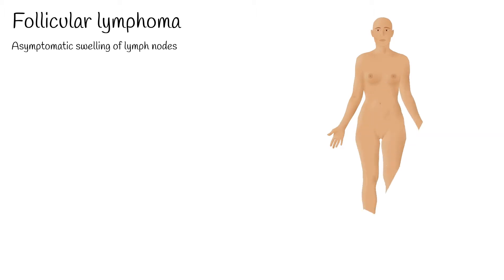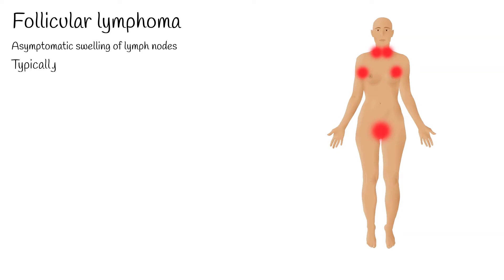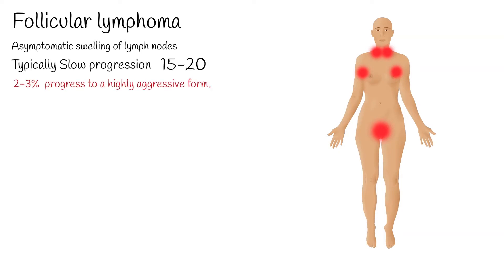Follicular lymphoma is the second most common non-Hodgkin lymphoma. It has a broad and extremely complex clinical picture with a wide range of manifestations. Most commonly, it presents as asymptomatic swelling of lymph nodes in the neck, armpits, and/or groin. Less often, it presents as a gastrointestinal tract cancer or a cancer in children involving lymphoid tissues of the head and neck area. Follicular lymphoma typically has a slow disease course which persists essentially unchanged for years. However, each year 2–3% of follicular lymphoma cases progress to a highly aggressive form.